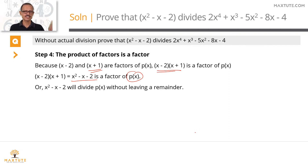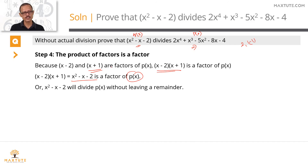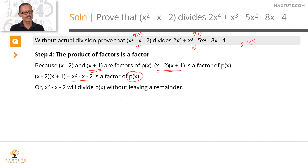To summarize: we split the middle term of the quadratic expression to find its factors and zeros. We plugged those zeros into the polynomial to establish that the zeros of q of x are also zeros of p of x. Since 2 and minus 1 are zeros of p of x, x minus 2 and x plus 1 are factors of p of x. Their product x minus 2 times x plus 1 — which is the quadratic expression itself — is therefore a factor of p of x, meaning the quadratic expression divides the polynomial without leaving any remainder.